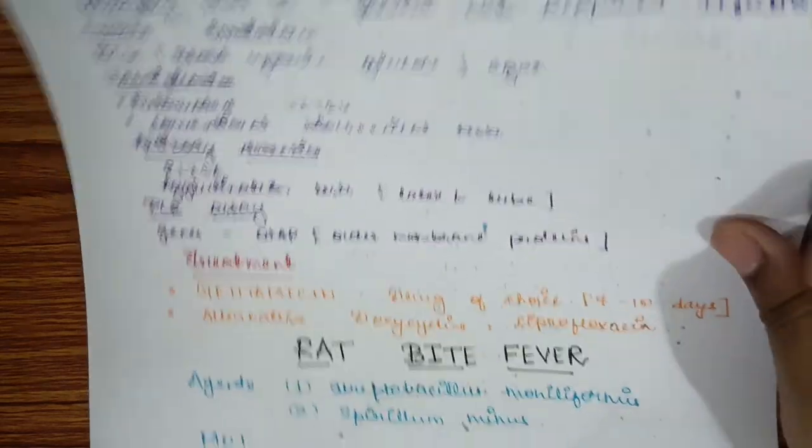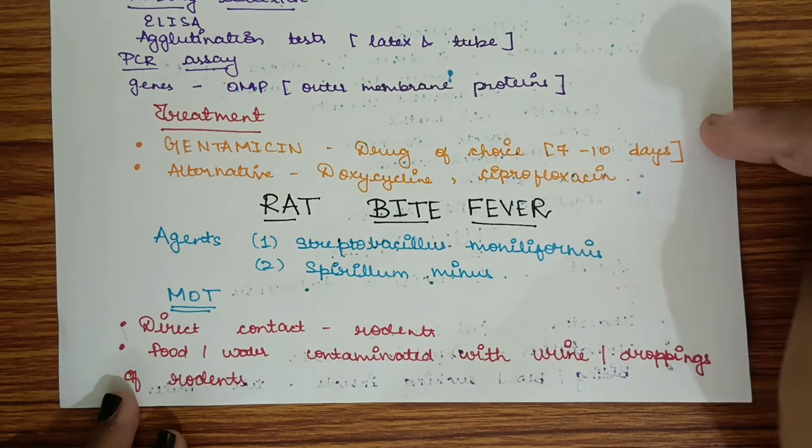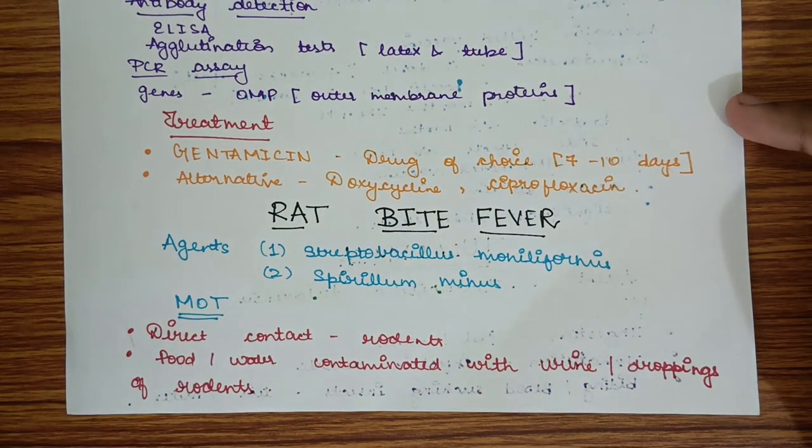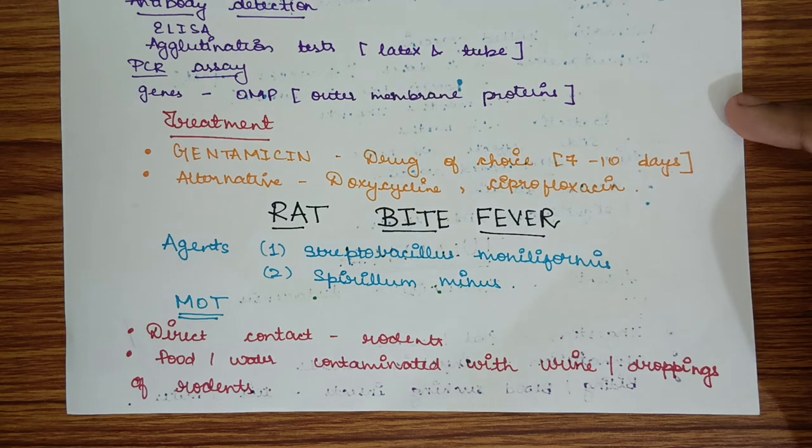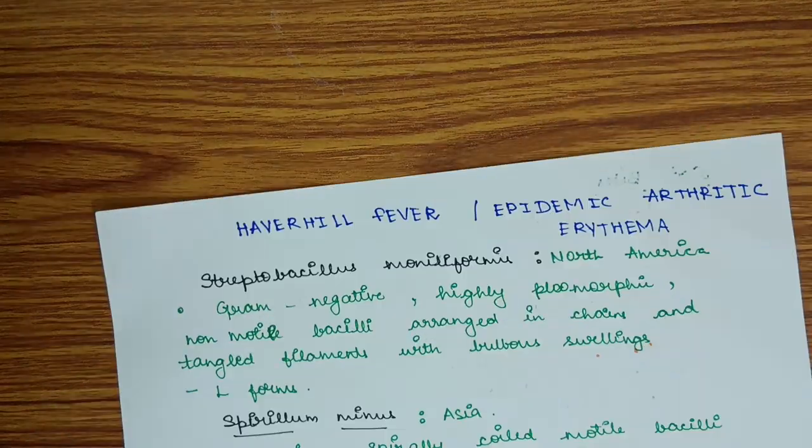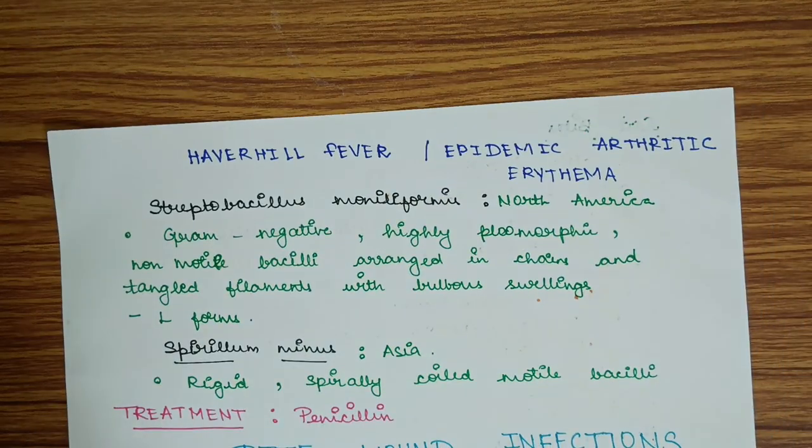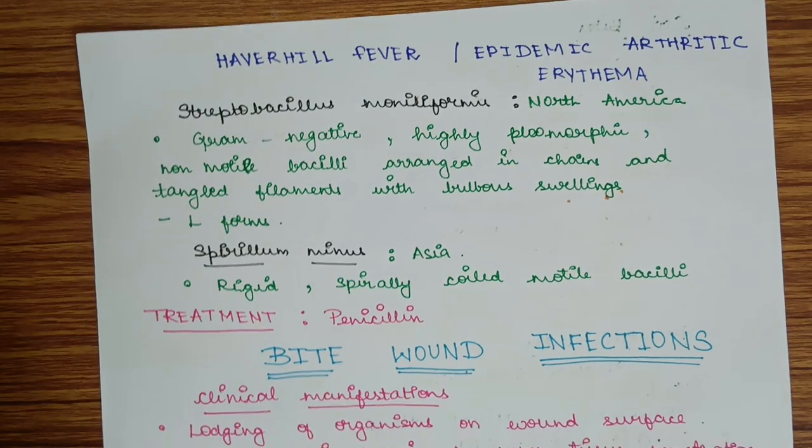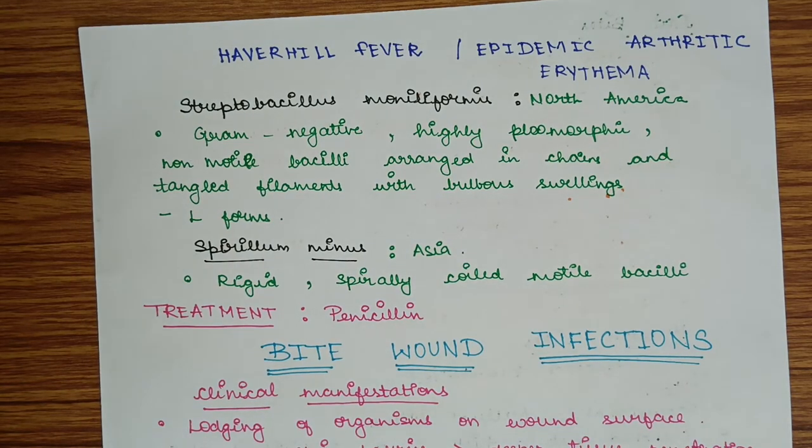Rat bite fever, an important question. Agents include Streptobacillus moniliformis and Spirillum minus. Mode of transmission is by direct contact with rodents (the reservoirs) or food and water contaminated with urine or droppings of rodents. It is also known as Haverhill disease or epidemic arthritic erythema.